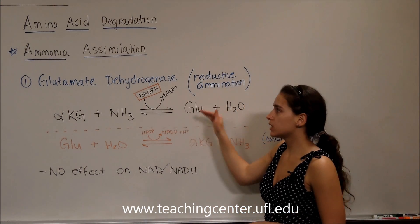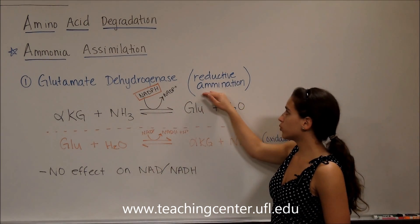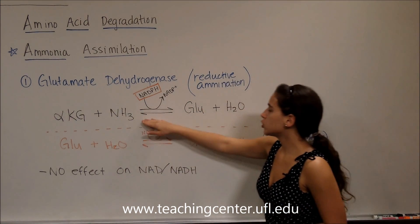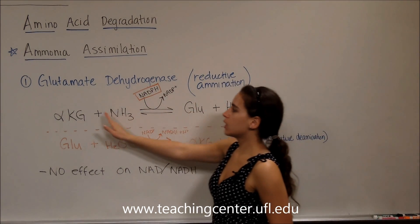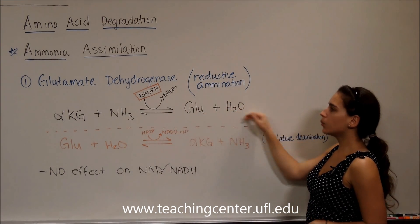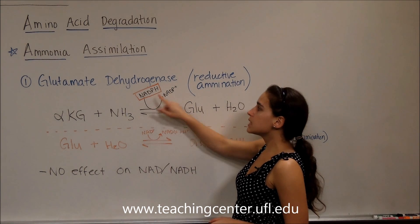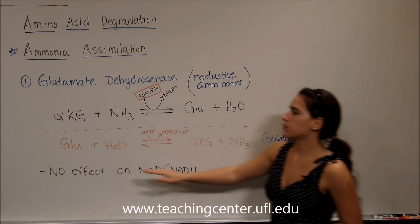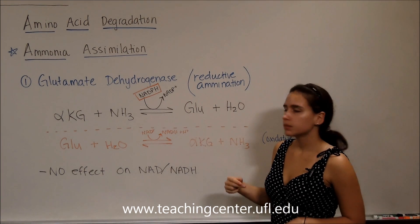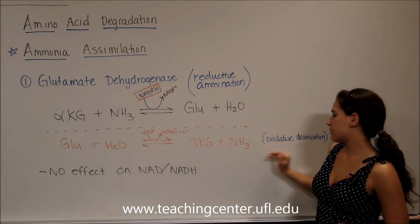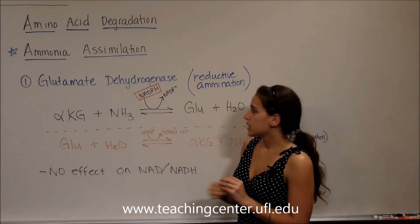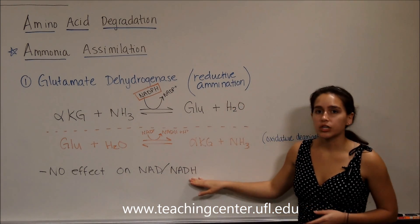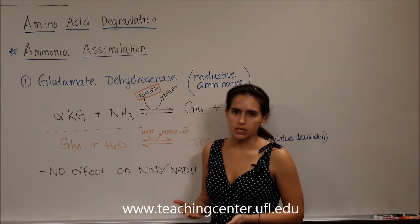Recall that glutamate dehydrogenase could go backwards and do reductive amination. This is what we're seeing here. Because we are assimilating that ammonia into the alpha-ketoglutarate, we are going to be doing reductive amination — putting that amino group into the alpha-ketoglutarate and making glutamate and water. We're going to do this with the use of NADPH instead of NAD+. You can see here I wrote the oxidative deamination so you can compare it — it's basically the same thing but flipped, and we're using NAD+ in the oxidative deamination. Glutamate dehydrogenase in the reductive amination direction does not affect the NAD/NADH ratio because we're using NADPH, so it would make no sense if it did.